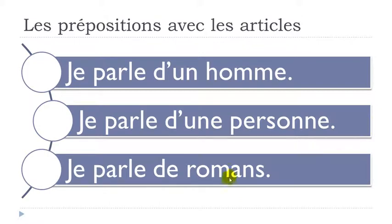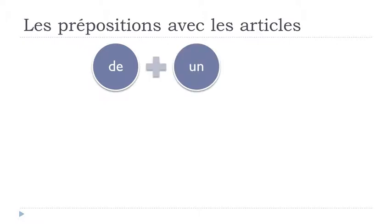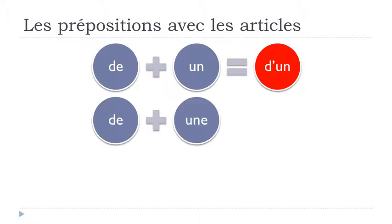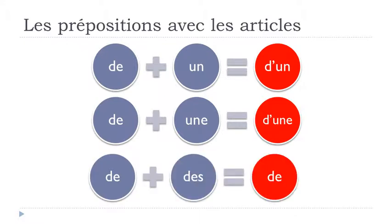The tricky thing is when you want to combine DE and DES, because it would sound strange to have DE DES. So the article DES disappears and you simply get DE. Je parle de romans - in that case, DES is taken away. So: DE plus UN becomes D'UN, DE plus UNE becomes D'UNE, and DE plus DES becomes just DE.